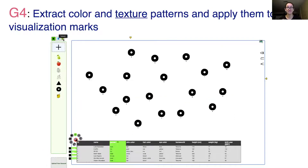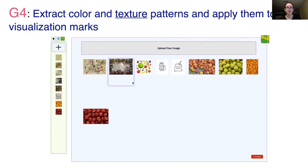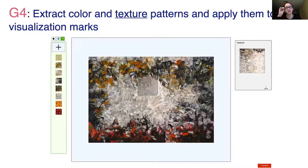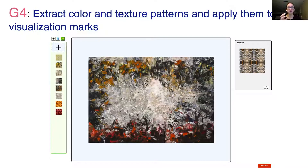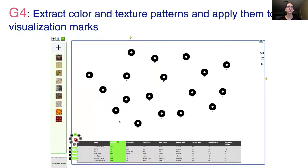We can also extract textures to apply them to shapes by dragging and resizing a tile. And if the tile is too small, DataQuilt applies a mirroring technique to avoid pixelation. When ready, we can save and apply this texture to the glyphs. Each data type can be assigned a different texture.